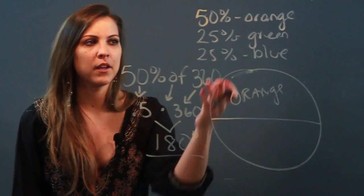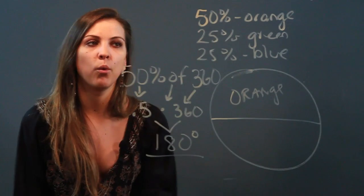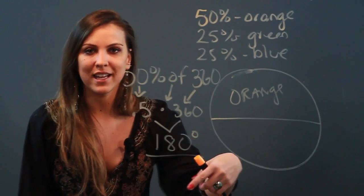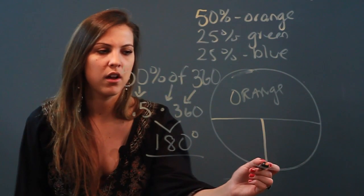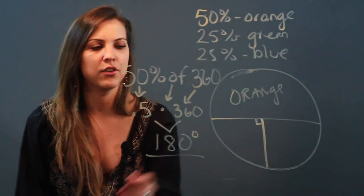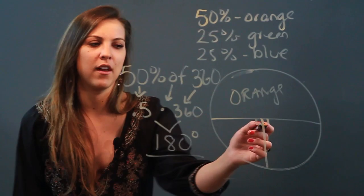And then the same thing for the 25% that's green. You want to know what is 25% of 360. Put that in your calculator, you're going to end up getting 90, and you'll draw a nice right angle for 90 degrees. And you'll get the same thing for the other one.